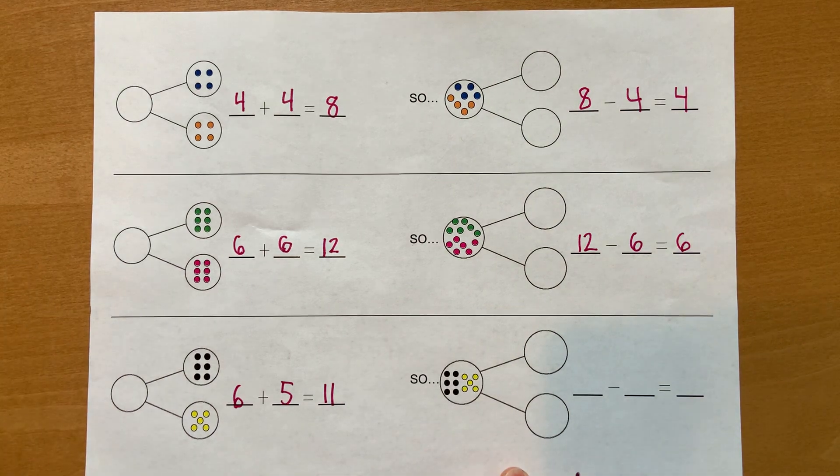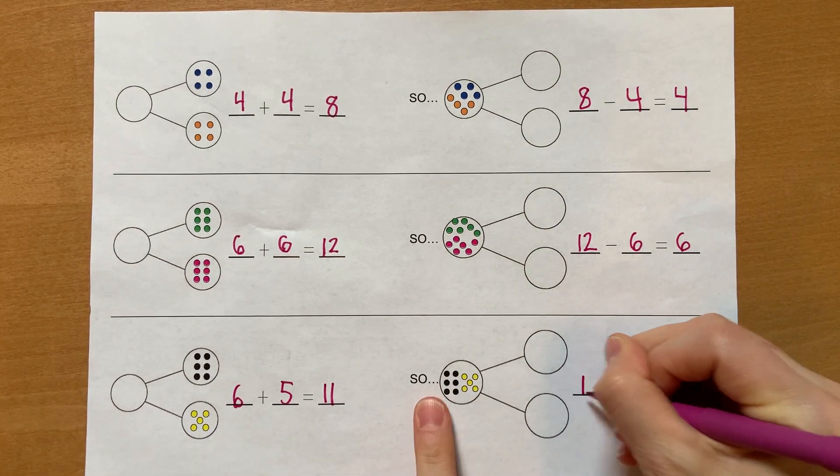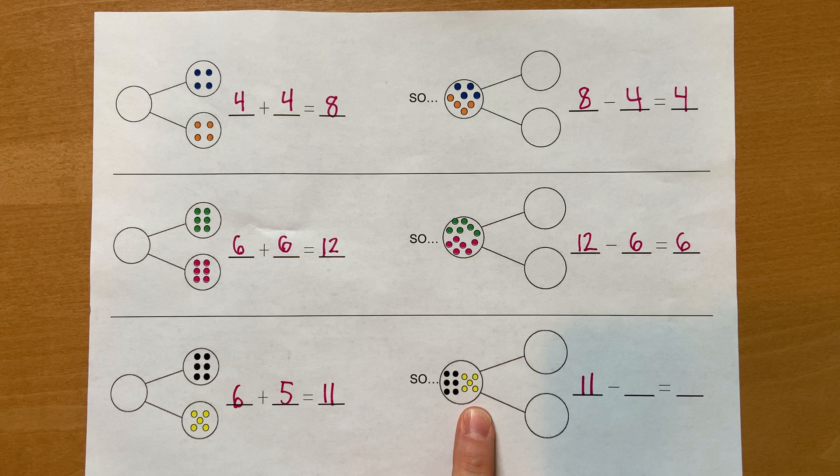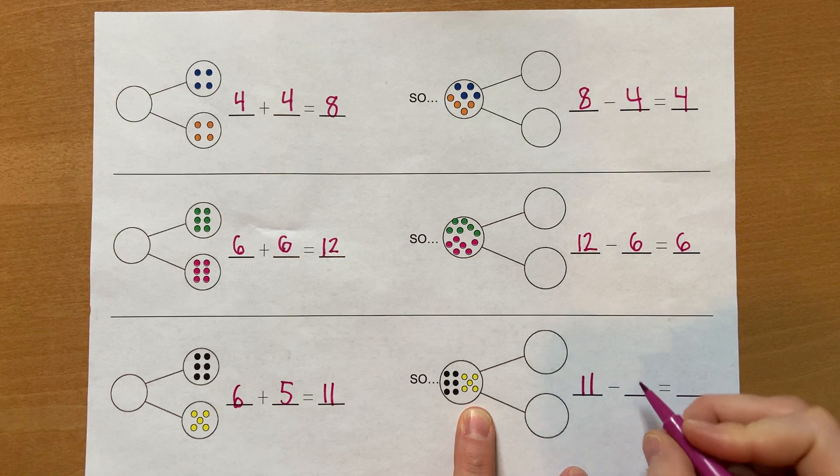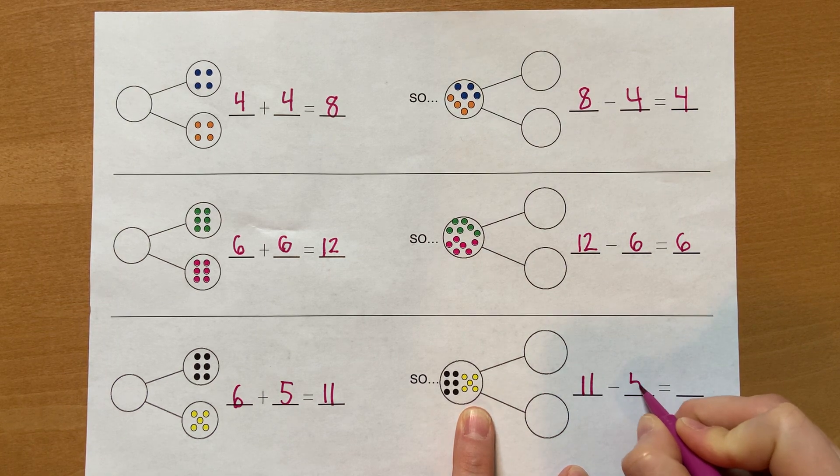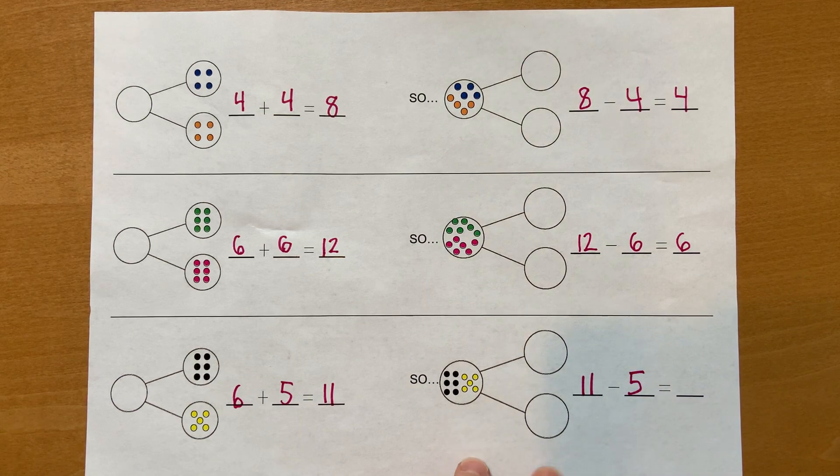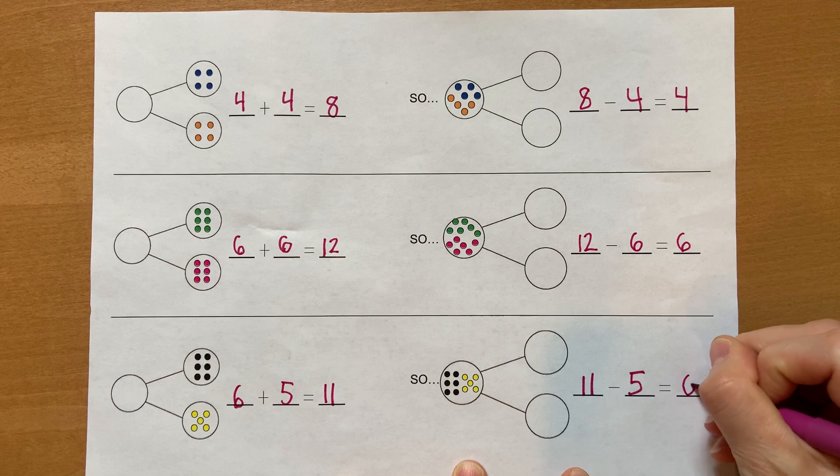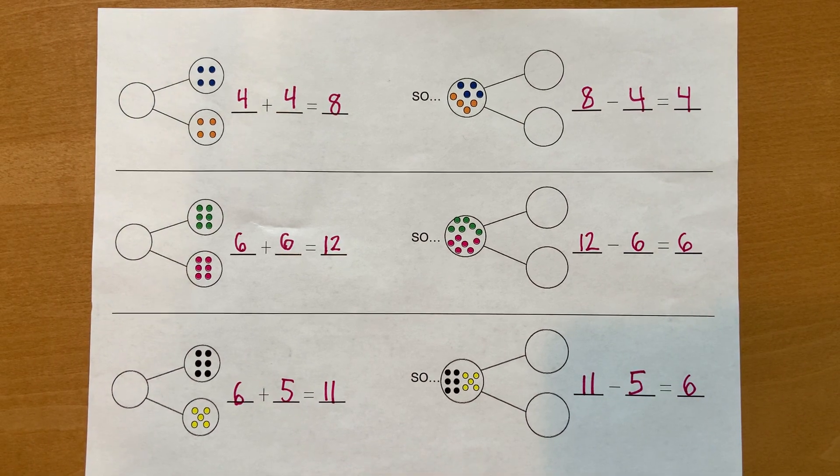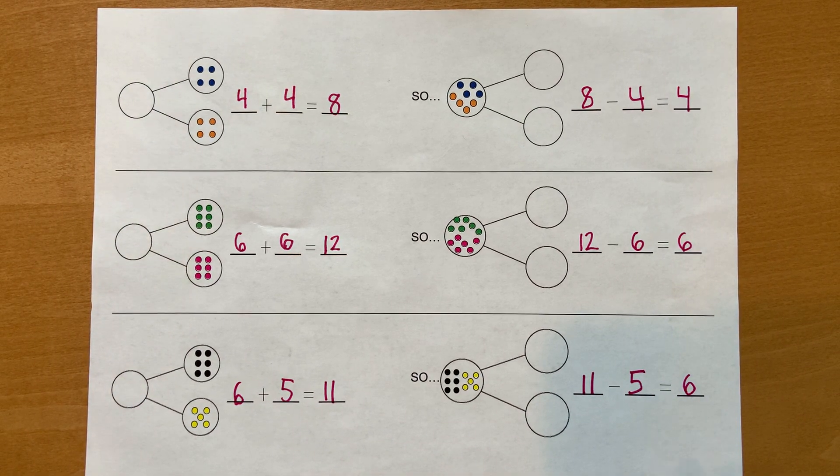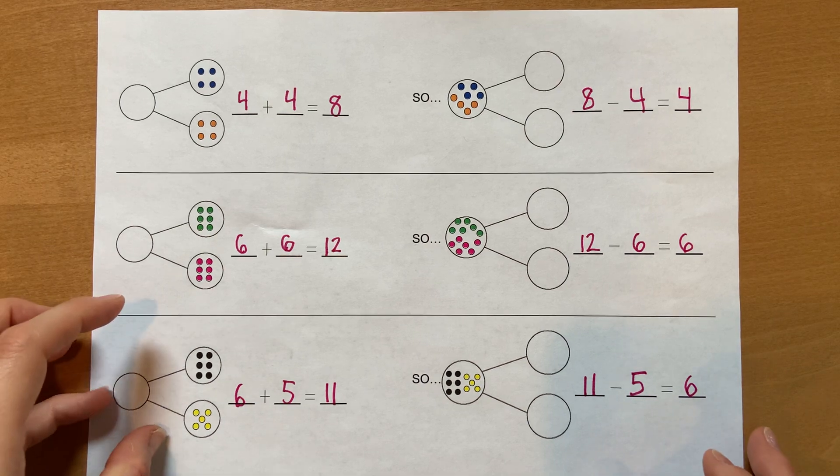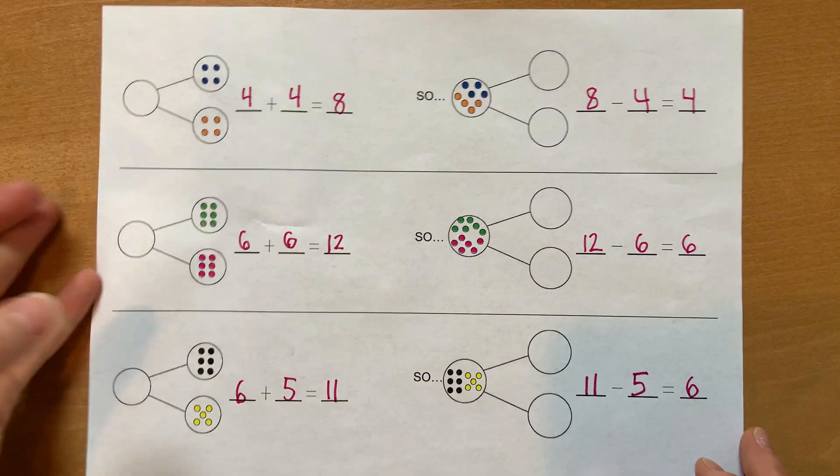Now I'm going to start with eleven because I'm starting with my whole. And I'm going to take away one of the parts. Let's take away five. How many are left? That's right, six. Addition helps with subtraction. You did a great job today practicing how addition can help you with subtraction.